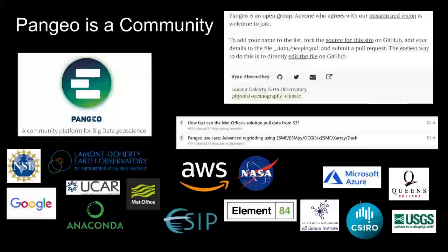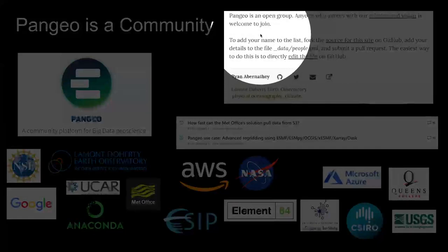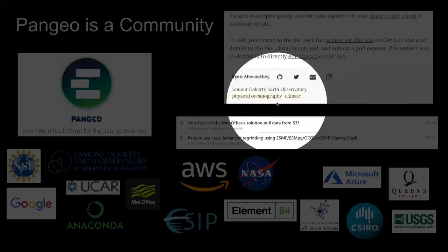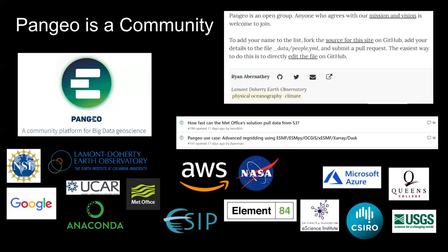Part of the reason people could join so easily was because right at the beginning they had this mission statement on their GitHub page: 'Pangeo is an open group. Anybody who agrees with our mission and vision is welcome to join.' You could just add your name with a pull request. When I found out about this I was immediately welcomed. I had been trying to do something similar, and when I realized what they were doing, I dropped what I was doing and joined this community.